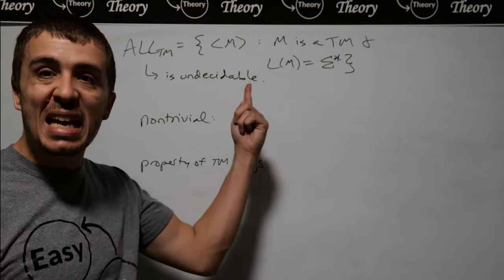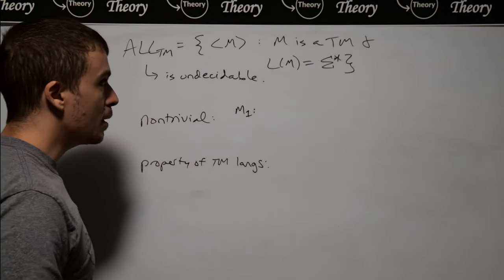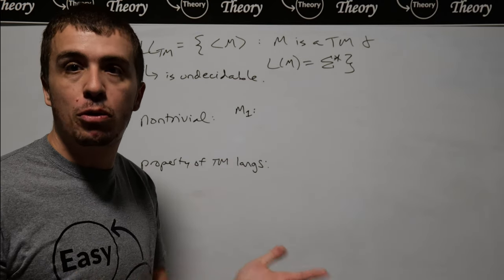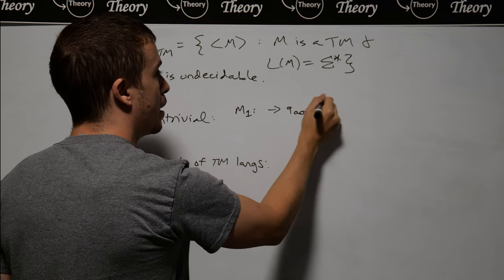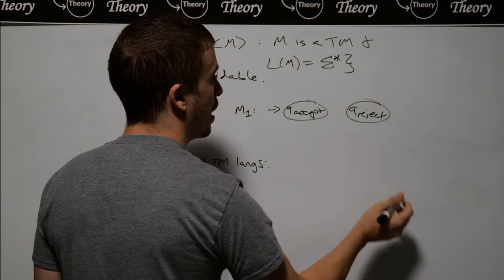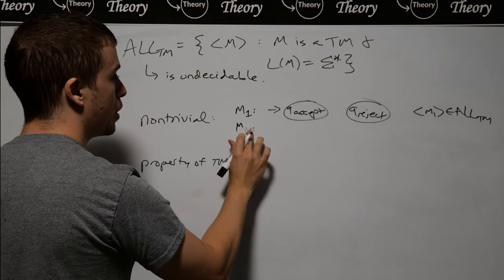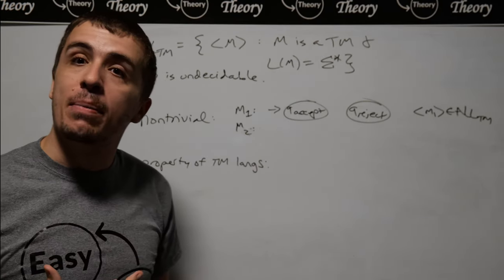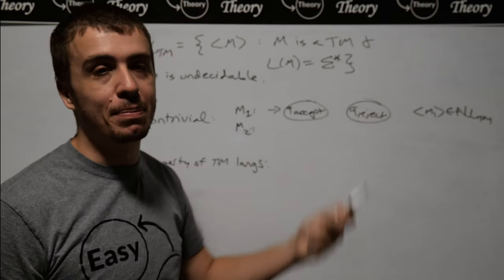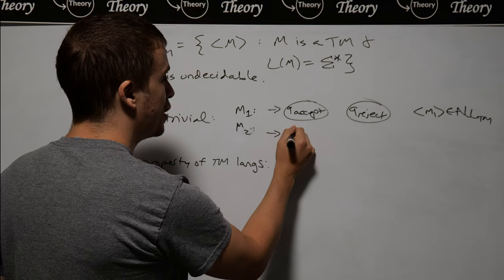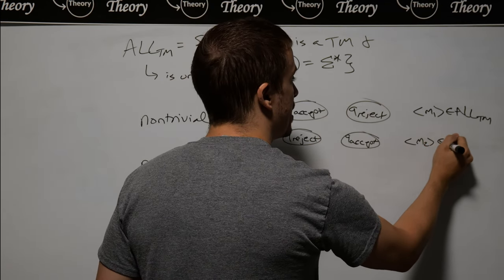To show it's non-trivial, we need to find a machine that's in there and another that is not. We've got to find M1 such that M1 accepts every single string. We can just make the accept state the start state, and therefore it accepts everything. So M1 is in all-TM. For another machine M2, we've got to show it is not in all-TM — it does not accept every single string. We can make M2 a machine that rejects everything. If I swap these two states, I can easily get a machine not in all-TM. So M2 is not in all-TM.